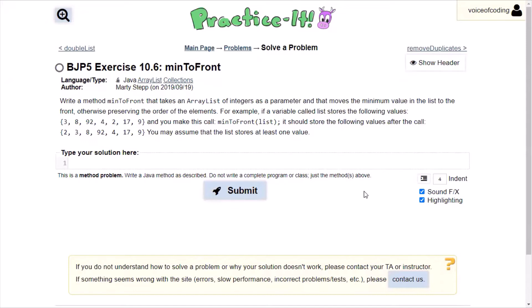Now our strategy to answering this problem is that first we need to find the minimum value. We'll just loop through the array list, very simple. And then we will remove it from the list first. And then we will move it to the front.